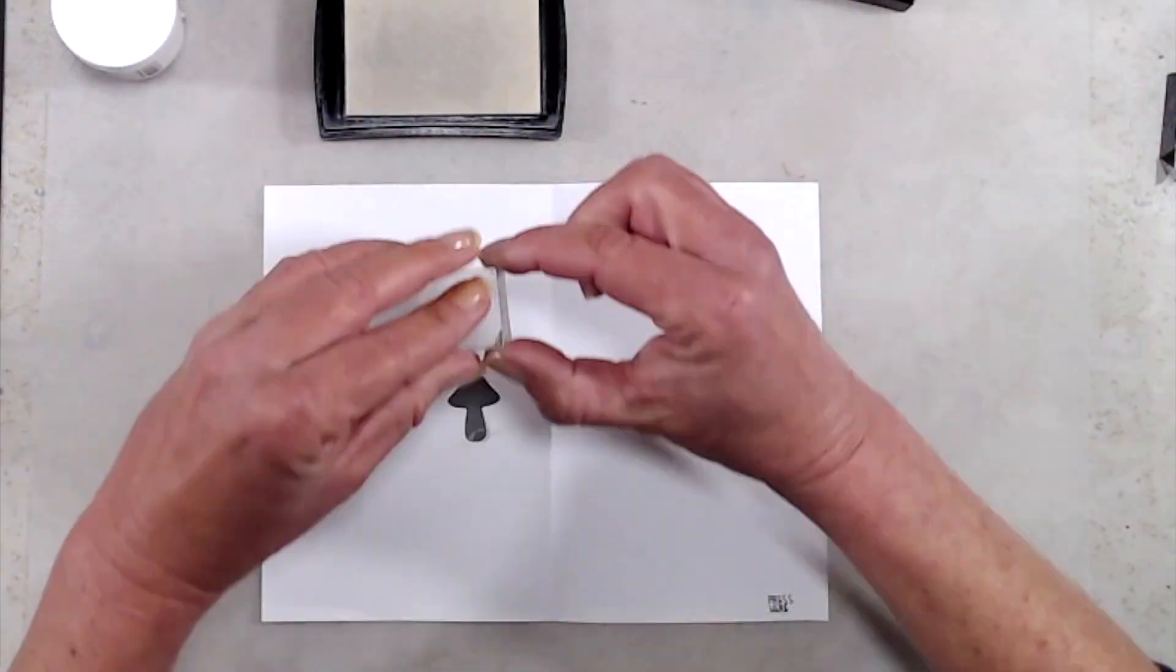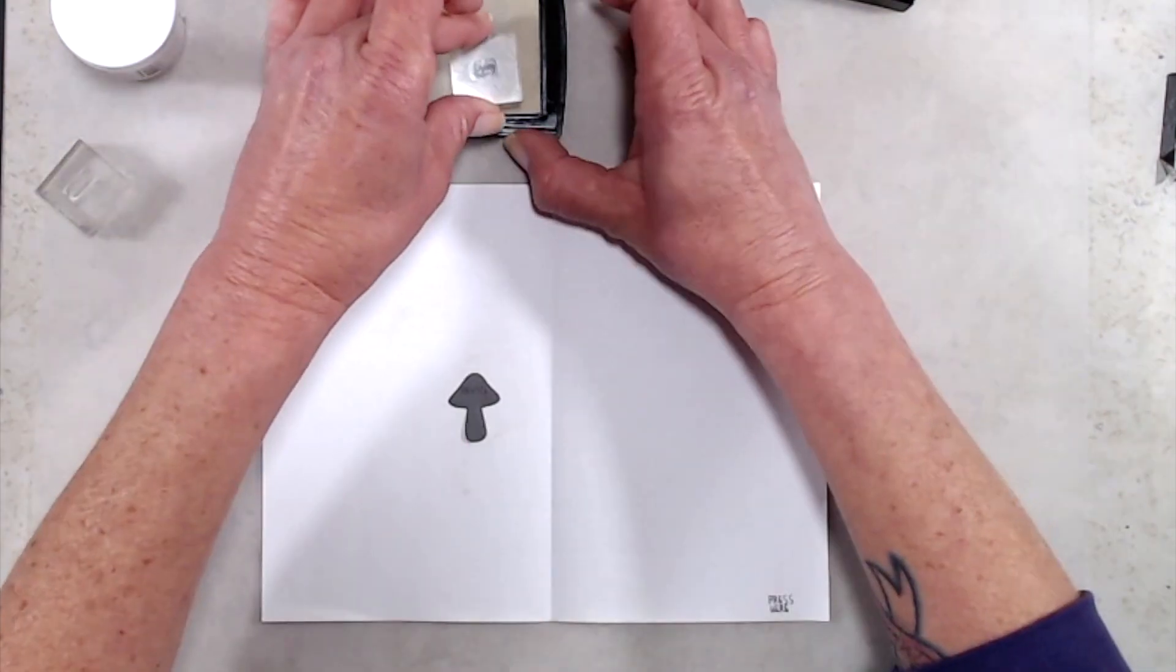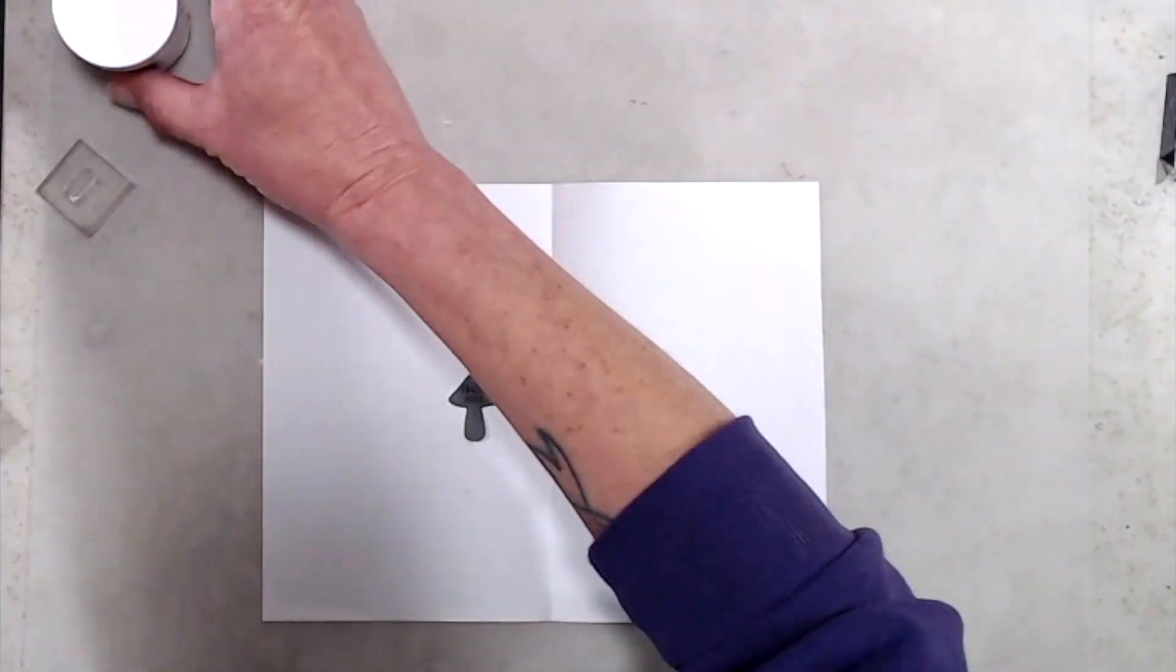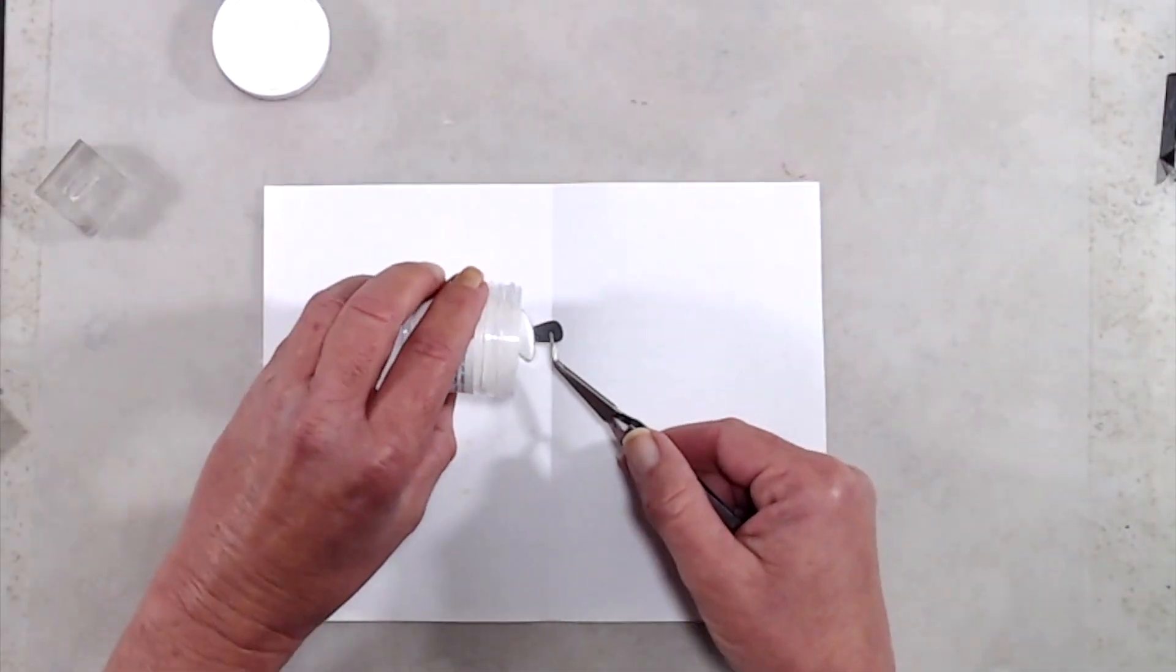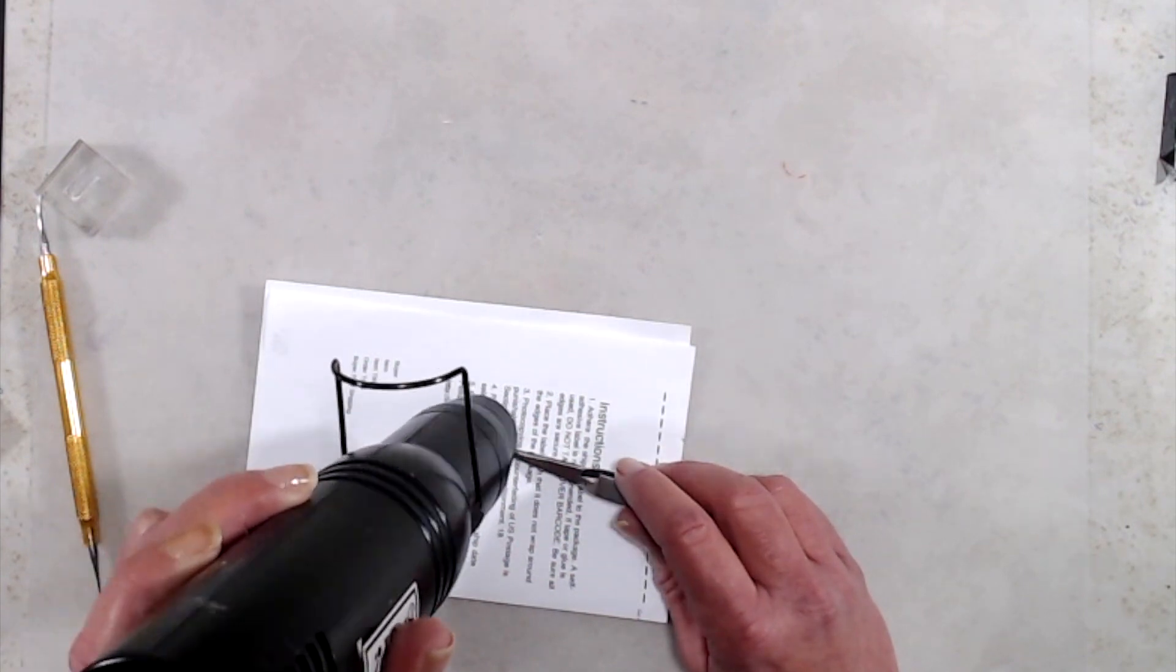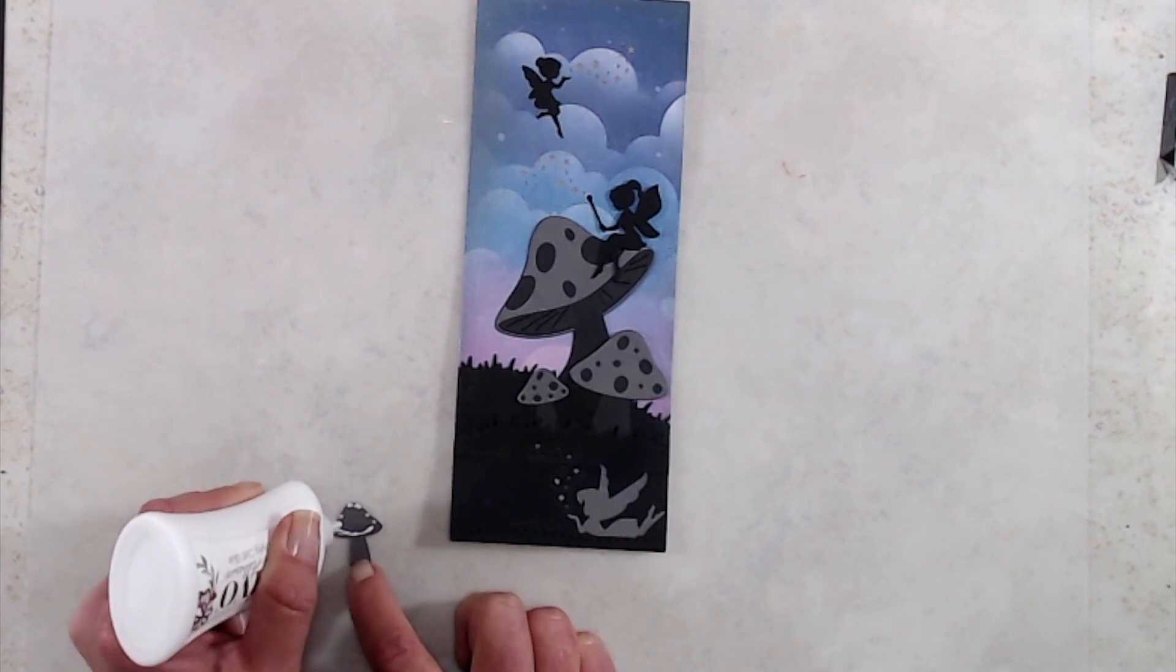In the meantime I did cut a small mushroom from the same dark gray cardstock and I stamped the words 'press here' from the Halloween Postage stamp set using Versamark ink, then I coated it with Detail White embossing powder and heat set it with my heat gun. I put a little bit of glue on the back side of that mushroom and then I adhered it over the little button for my light-up mechanism.